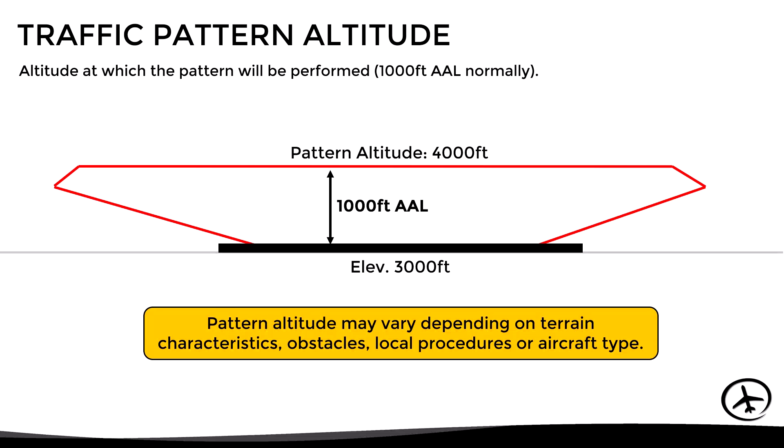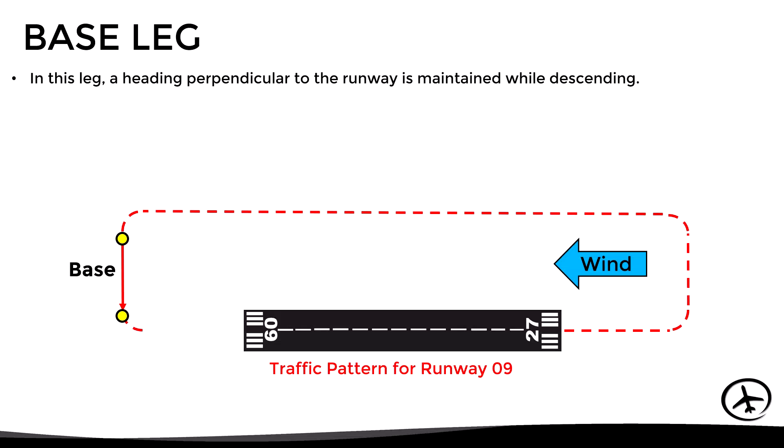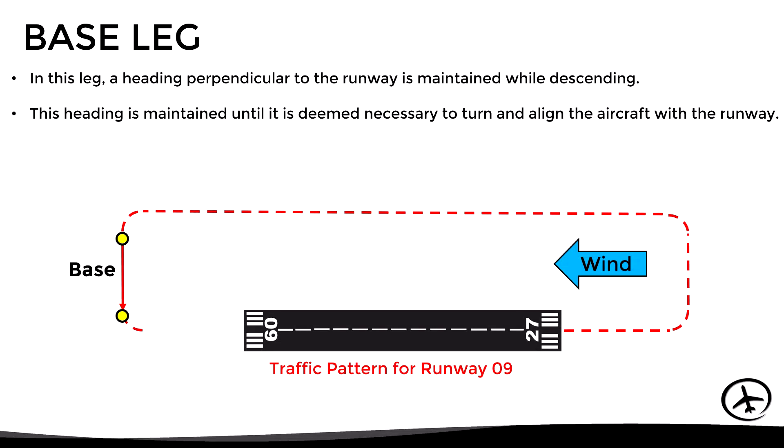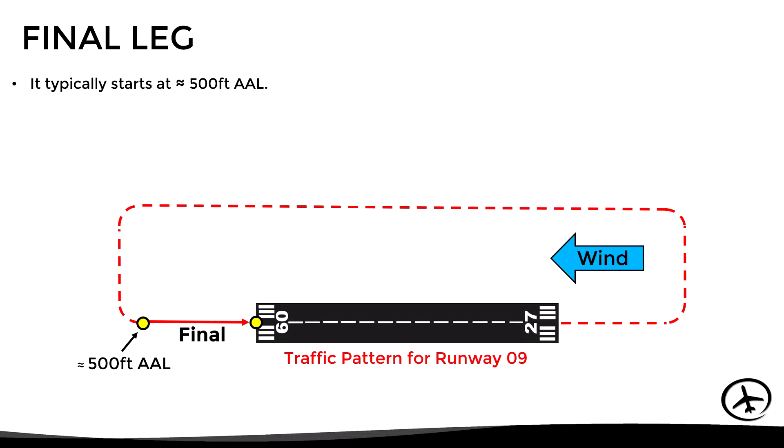So with this being said, let's go back to the key position at 45 degrees in relation to the threshold, since it is normally here where the aircraft starts the turn to the base leg. Here a heading perpendicular to the runway is maintained while descending to intercept the approach path. This heading is maintained until it is deemed necessary to turn to final and align the aircraft with the runway.